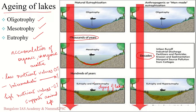If a lake is to be saved, certain measures must be taken, such as on-site algae removal, sludge removal, and flushing with nutrient-poor waters. To summarize, a lake goes through three stages before dying: oligotrophy, mesotrophy, and eutrophy.